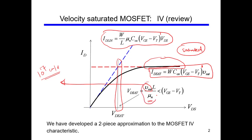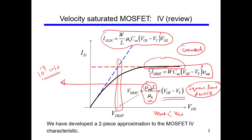VDsat equals Vsat times L divided by mobility. If you have a voltage equal to this, you are exactly at the saturation point. Below this is the linear region and above this is the saturation region. Note that for a square law device, VDsat equals VGS minus VT, which is larger than VDsat in the velocity saturated model — so the velocity saturated device saturates at a lower voltage.